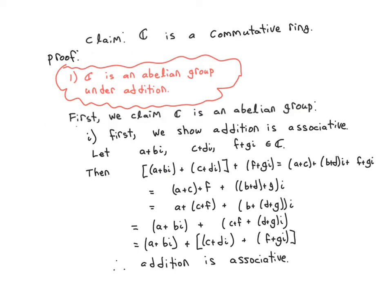First, we need to show that we get an abelian group under addition. That alone will have its own steps, because that means first we need to show that the addition is associative. So let's take three complex numbers and let's show that if you add them in order, you can move the parentheses. So here is the triple sum with the parentheses around the first two terms. By definition of addition, the sum of the first two complex numbers is given by adding the real parts and adding the imaginary parts.